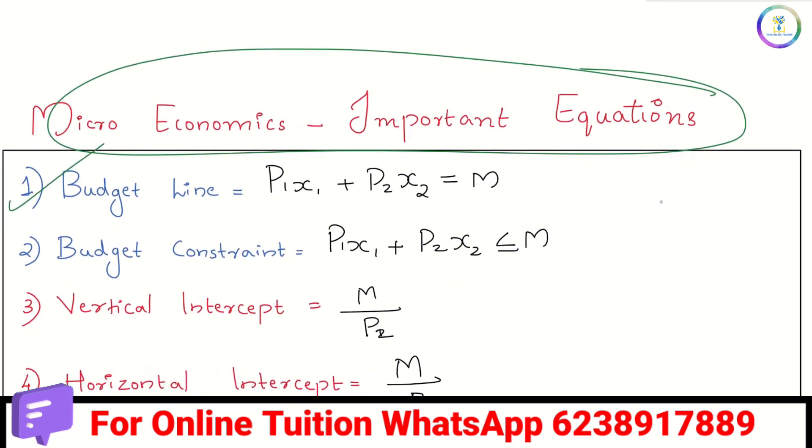Budget line equation is p1x1 plus p2x2 equal to m. Then the budget constraint: p1x1 plus p2x2 less than or equal to m. For these equations, we will post these equations, so that is why we will see the video on microeconomics.